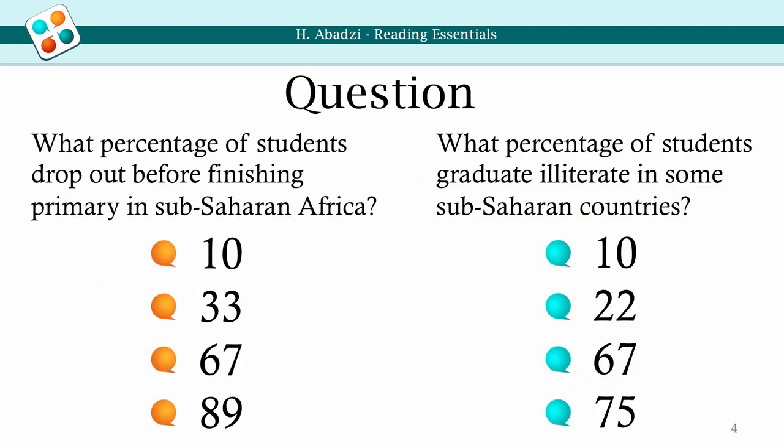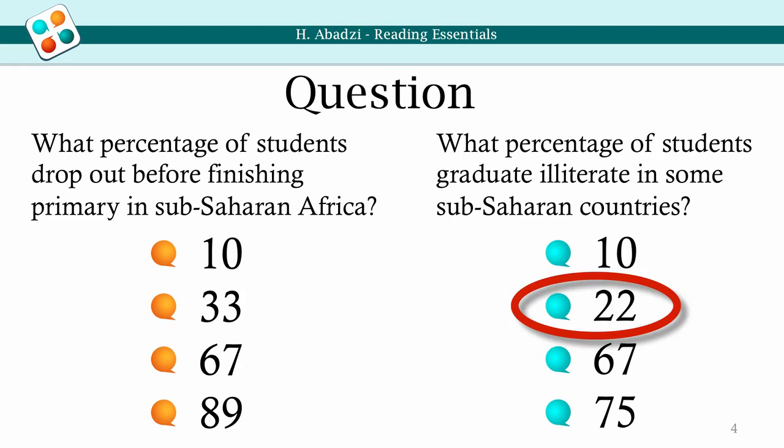Make a guess: about what percentage of students overall drop out before finishing primary school in sub-Saharan Africa? And what percentage of students graduate illiterate in some sub-Saharan countries? About 67% of students drop out before finishing primary school in sub-Saharan Africa. About 22% of students graduate illiterate in some sub-Saharan countries.